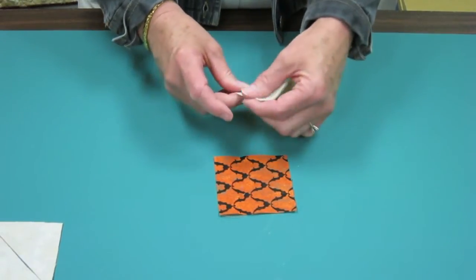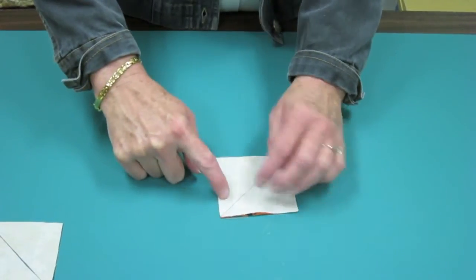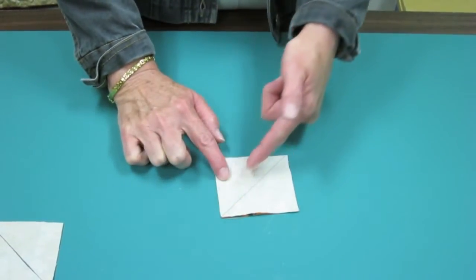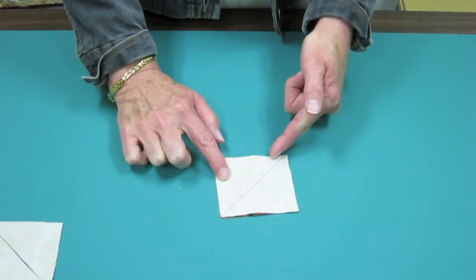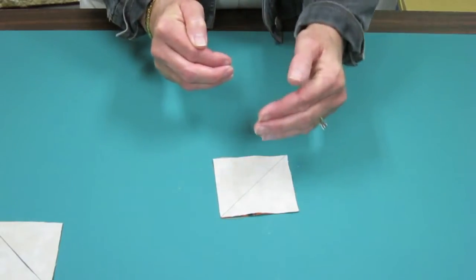Lengthwise doesn't have any, crosswise has some. So I want to match lengthwise to lengthwise, crosswise to crosswise. Now I can stitch a quarter of an inch on either side, and when I get done, they should still be matching each other. They shouldn't have slipped past.